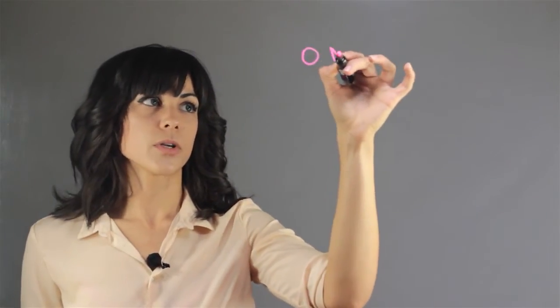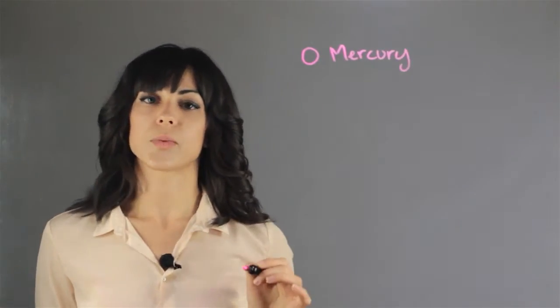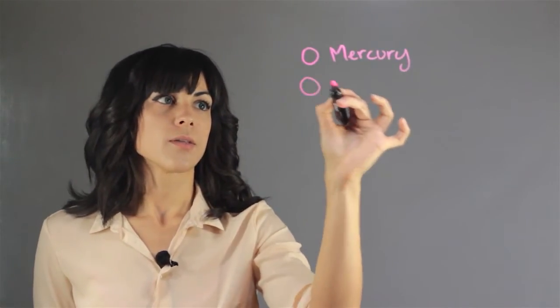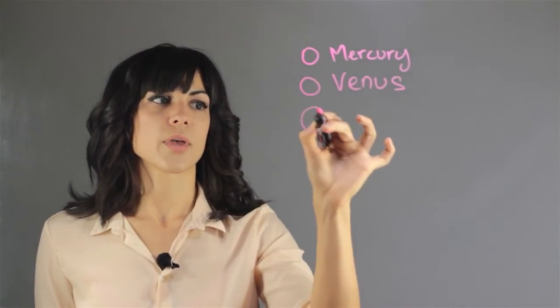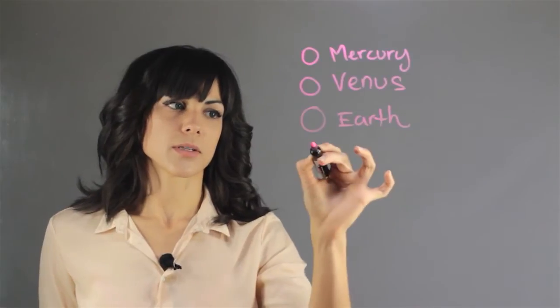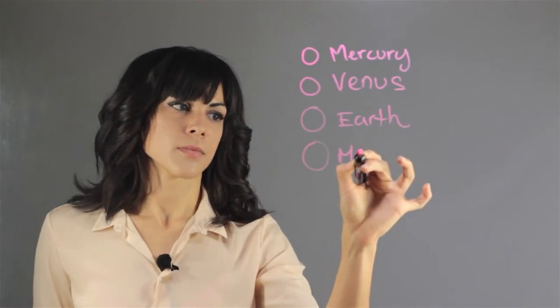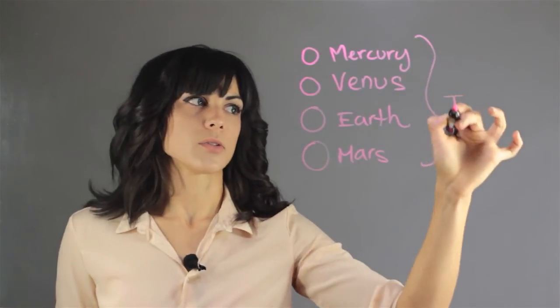The first one is Mercury, that's the smallest one and the closest one to the Sun. Then it goes Venus, and then we have us and Mars. These are classified as the terrestrial planets.